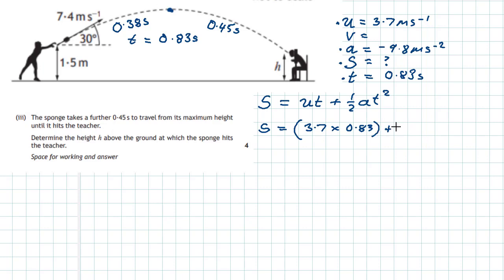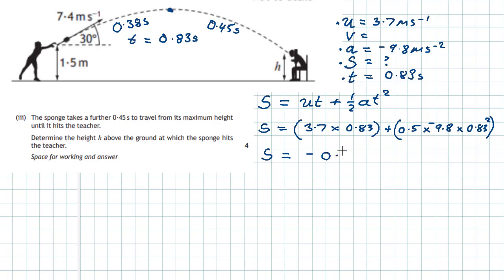We change the half to 0.5 for the calculator, multiplied by minus 9.8 since gravity acts downwards, multiplied by 0.83 squared as in the equation. Plug that into your calculator and we end up with an answer of minus 0.30 metres.